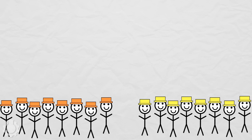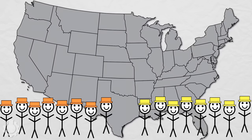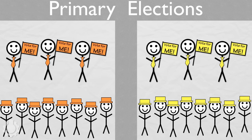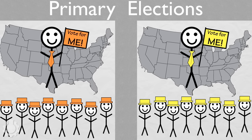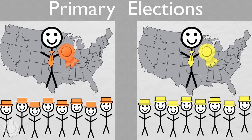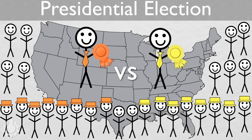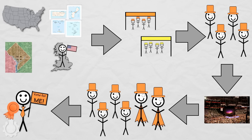Primary elections are how political parties in the United States pick their strongest candidate to run for president. The parties do this by holding many elections in each of the states, and the candidates with the most votes from these elections become the party's official nominees. These nominees then face each other in the national election for president. But this isn't the whole story — there are five things that make it a bit more complicated than that.